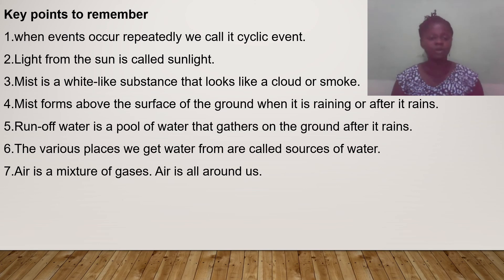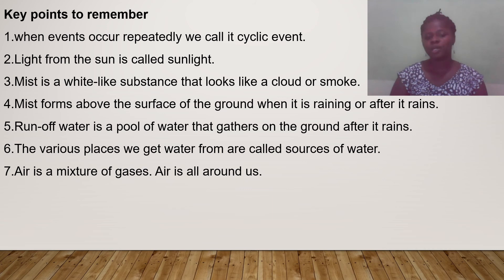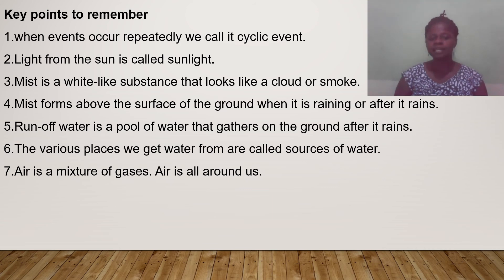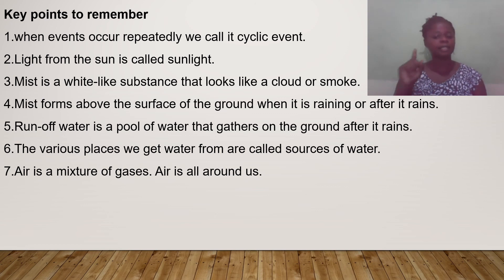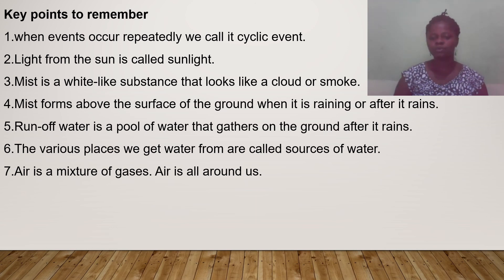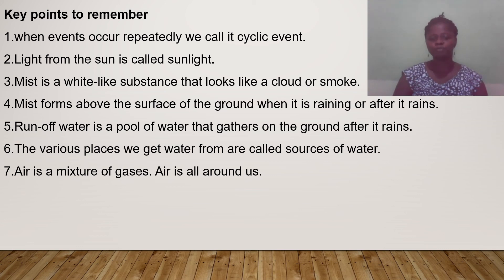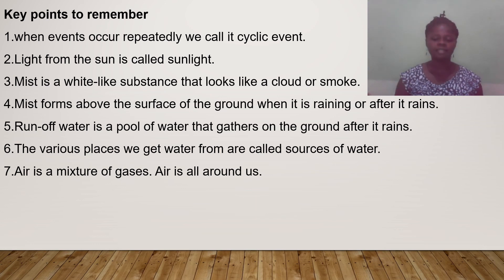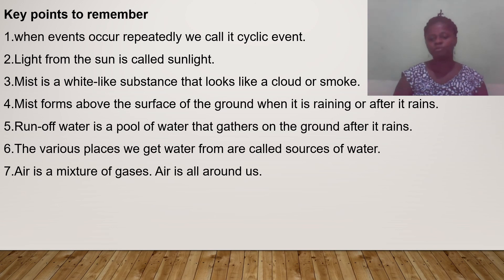Now let's look at the key points to remember: when events occur repeatedly, we call them cyclic events. Light from the sun is called sunlight. Mist is a white substance that looks like cloud or smoke. A pool of water that gathers on the ground after rain is called runoff. The various places we get water from are called sources of water. And air is a mixture of gases all around us. Thank you for watching — I hope you learned something today.